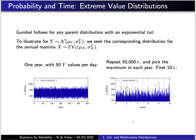The Gumbel distribution applies to any parent distribution with an exponential tail, including the normal and exponential distributions. Suppose we have a process characterized by a normally distributed random variable Y — the parent distribution — and we seek the distribution of annual maxima. For this to be meaningful, we need a specific number of realizations of Y per year. Then we can identify the single value with the largest magnitude in that period.